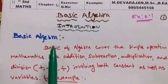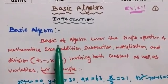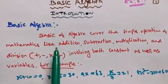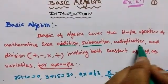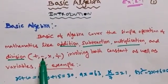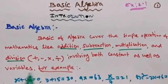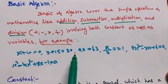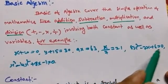What is basic algebra? Basic algebra covers the simple operations of mathematics: addition, subtraction, multiplication, and division — the 4 basic operations. It involves both constants as well as variables. For example: x plus 10 equals 0, y plus 15 equals 13, 9x equals 63, x plus 7 equals 21, 5s squared minus 7s plus 6 equals 0.